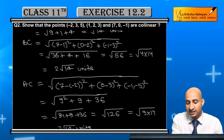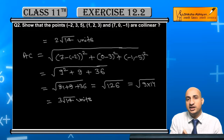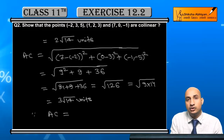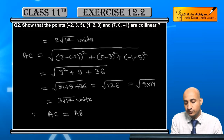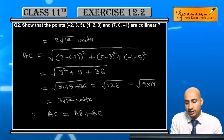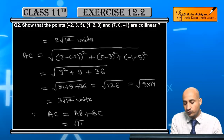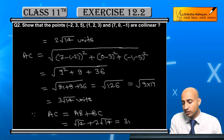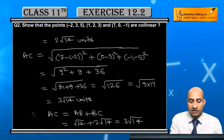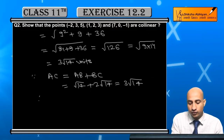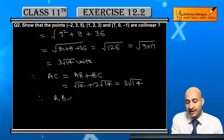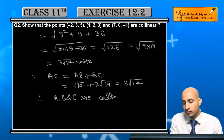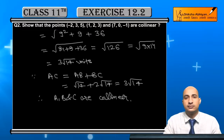Now student, AB + BC = square root of 14 + 2 square root of 14 = 3 square root of 14, which equals AC. Since AC is the longest and AB + BC = AC, therefore points A, B and C are collinear.